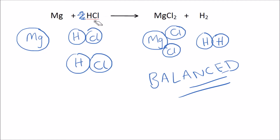We can only multiply the whole molecule by a coefficient. So instead of one molecule, we have two molecules of hydrochloric acid. We can't change the subscript numbers. One atom of magnesium reacts with two hydrochloric acid molecules to produce one molecule of magnesium chloride and one molecule of hydrogen gas.